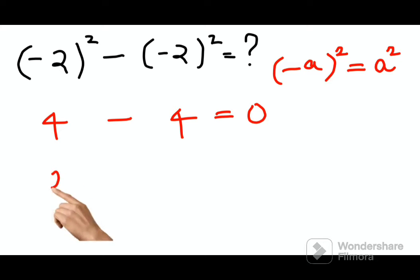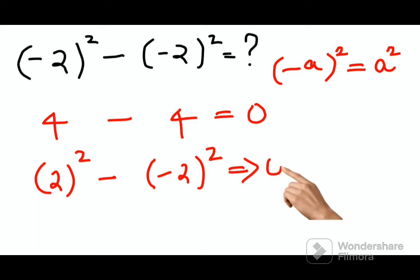But now if you had 2² minus (-2)², again this answer would now be 0. If you have any doubt, you can go ahead and try it out using the same trick which I showed you.